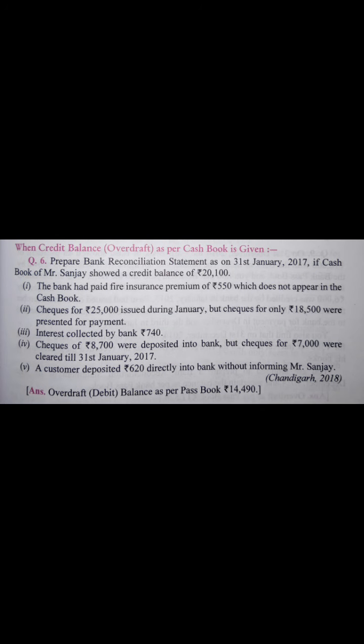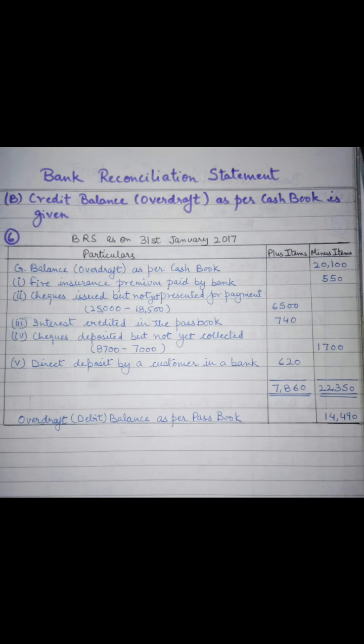The second entry: checks for 25,000 were issued during January but checks for only 18,500 were presented for payment. The difference of this amount has to be added in our BRS. So the entry is checks issued but not yet presented for payment — the difference of 25,000 and 18,500 comes to 6,500, and this amount is written in the plus item column.